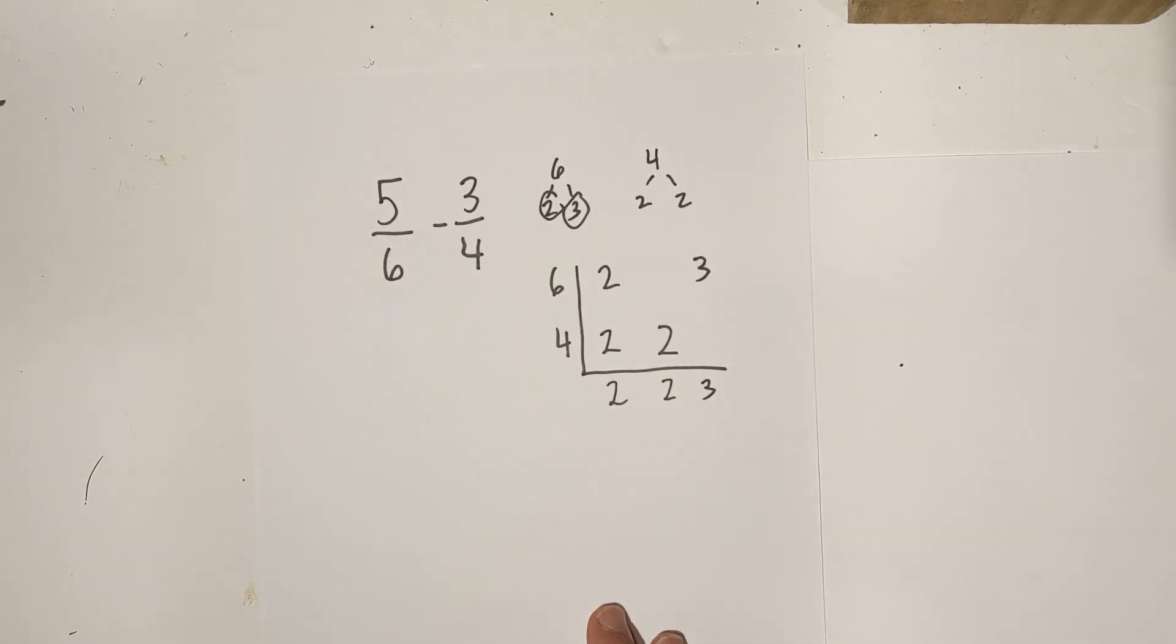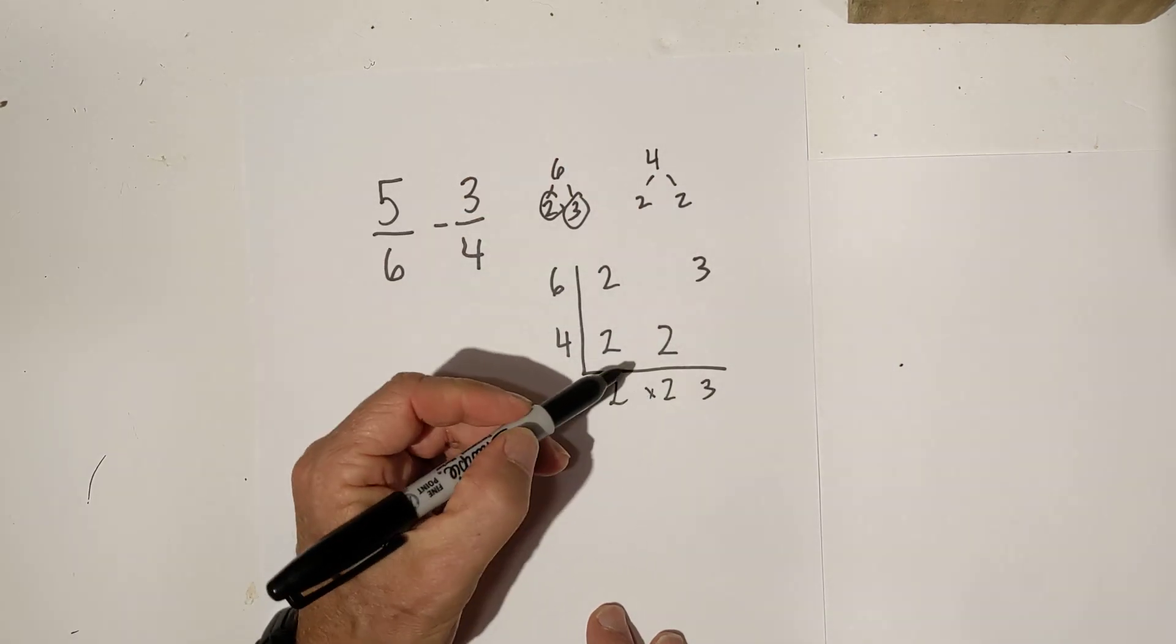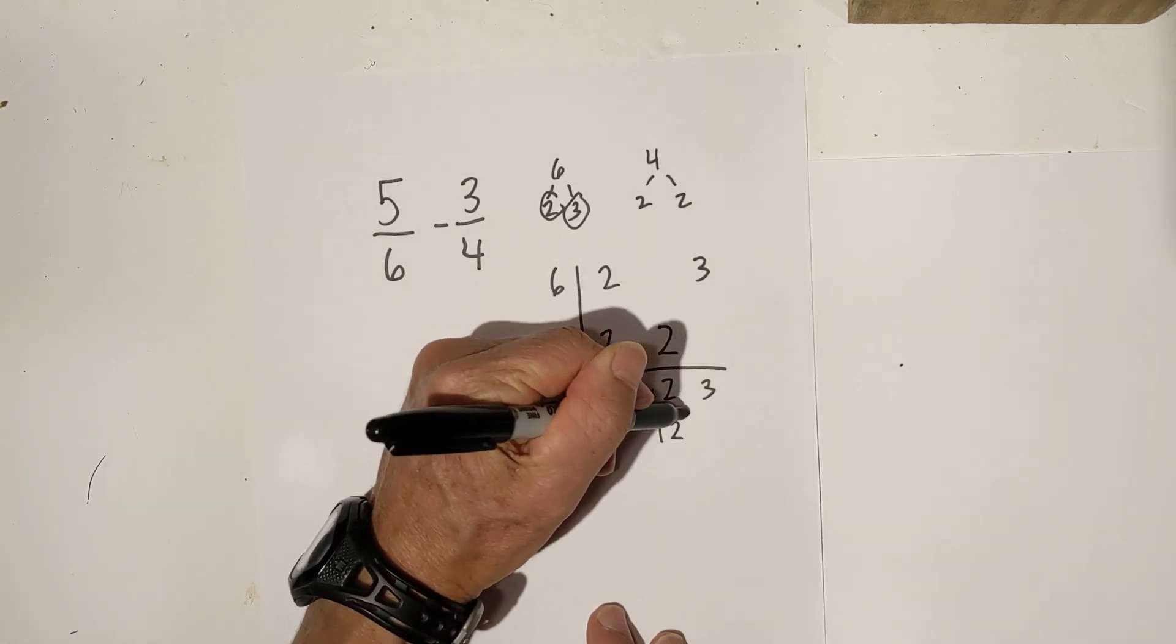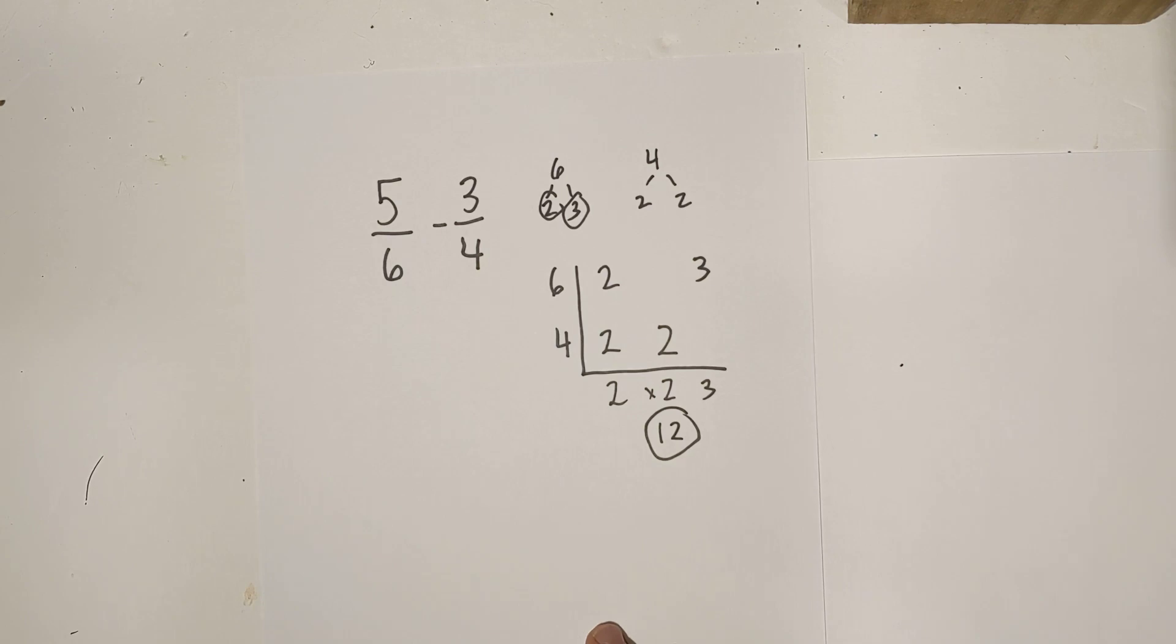So here we go. And then you just multiply this together. That's 4, and then 4 times 3 is 12. So our common denominator is 12.